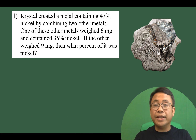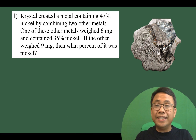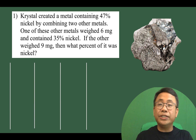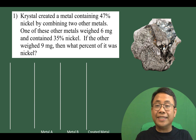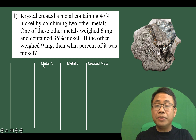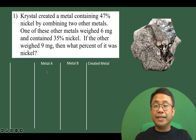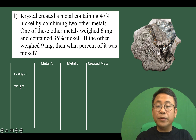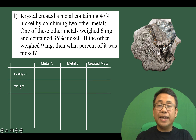Now let's solve this problem together. One technique is to create tables in order to organize our data. Crystal created the metal out of two other metals — let's call them metal A and metal B. So let's put here the strength and the weight rows and let's complete our table.